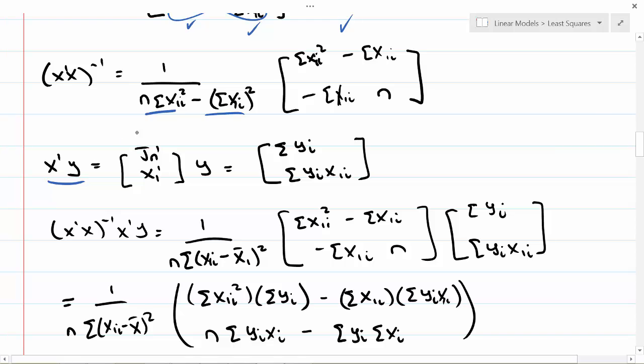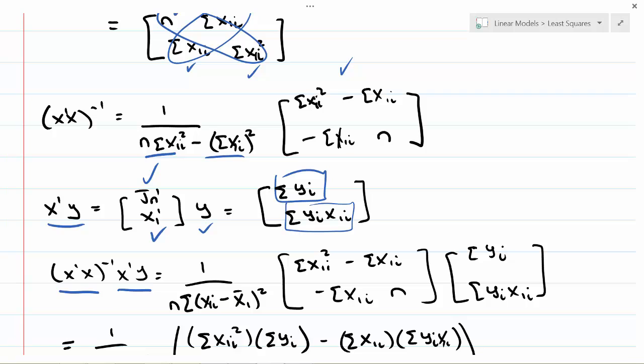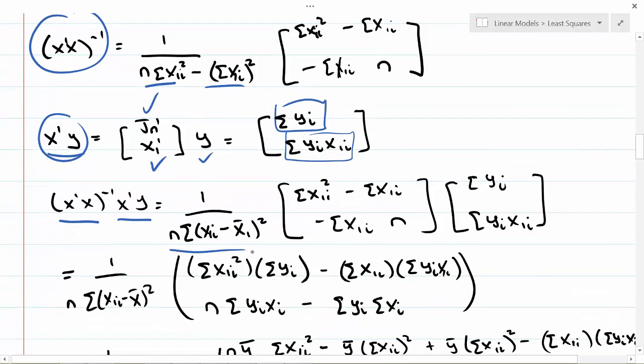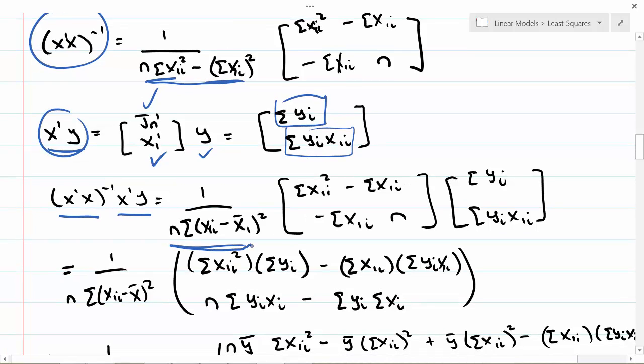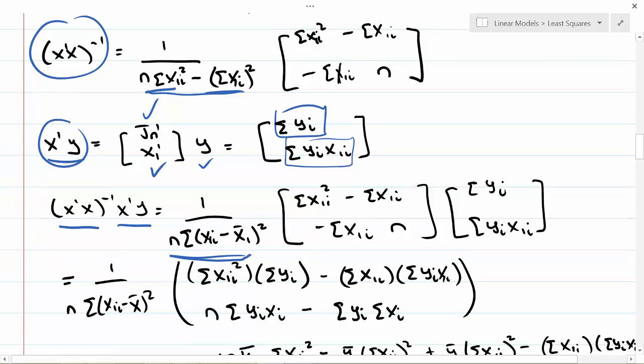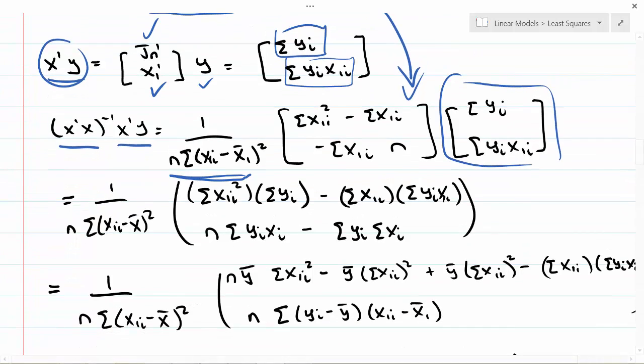Now let's also look at x transpose y. That's J_n transpose and x_1 transpose times y, which is the sum of the y's and the sum of the y's times the x's. So x transpose x inverse times x transpose y, we can plug in from our formulas that we worked on, and we get this determinant term first. Notice the determinant term can be related to this shortcut formula for calculating the sample variance, so I wrote it out as n summation x_i minus x-bar squared.